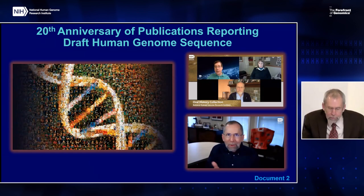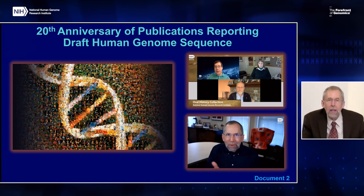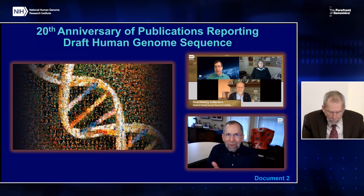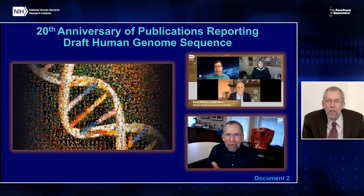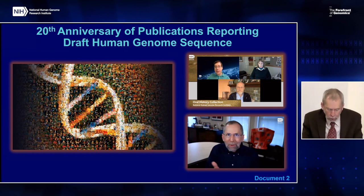On February 12, 2001, government officials, members of the press, and leaders of the Human Genome Project gathered in downtown Washington, D.C. to publicly unveil the major scientific highlights from the first examination of the draft sequence of the human genome. On February 15, 2001, Nature and Science published the major papers describing those findings. NHGRI marked the 20th anniversary of these historic publications through a story in my monthly newsletter The Genomics Landscape, an update to the Human Genome Project Timeline of Events webpage, and a joint video interview with Bob Waterston and Jane Rogers. These efforts are representative of the ongoing work of the NHGRI history of genomics program.